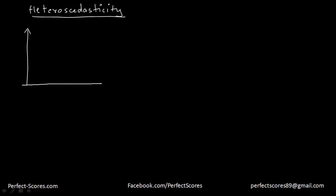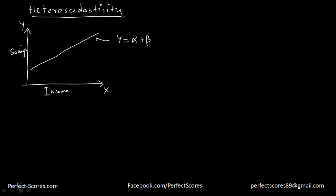Let's suppose we want to find out the relationship between income levels and savings. This is the x-axis, this is the y-axis. We want to find out the relationship between income levels and savings because generally we know that as income level increases, savings also tend to increase. So this regression line is denoted as y — which is our savings — equal to alpha plus beta times x plus some error term. We have a scatter plot where each point represents a single individual with his or her own income and savings level.